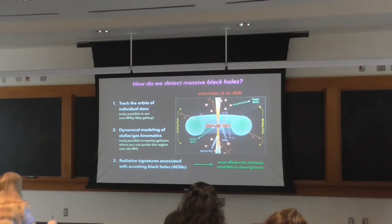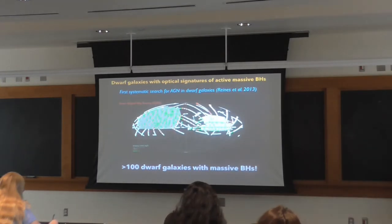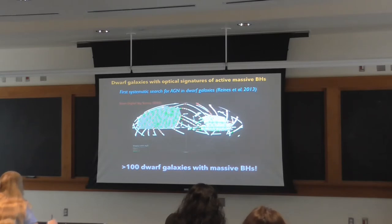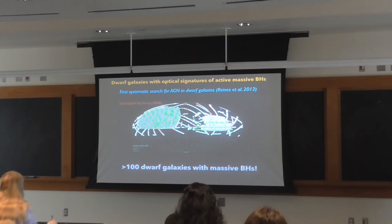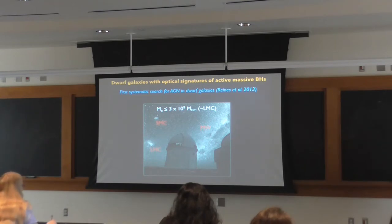For the remainder of the talk I'll tell you about two main searches: one at optical wavelengths and one more recently using radio wavelengths. The optical search used spectroscopy from the Sloan Digital Sky Survey, which produced the largest sample of dwarf galaxies hosting massive black holes and was the first systematic search for AGN in dwarf galaxies. I analyzed spectra of about 25,000 dwarf emission-line galaxies in the SDSS, all with stellar masses less than three times 10^9 solar masses — LMC kind of mass, which is the most massive dwarf satellite of the Milky Way.